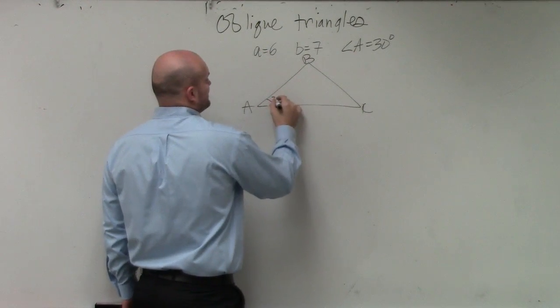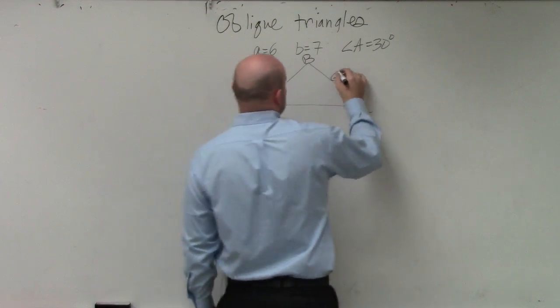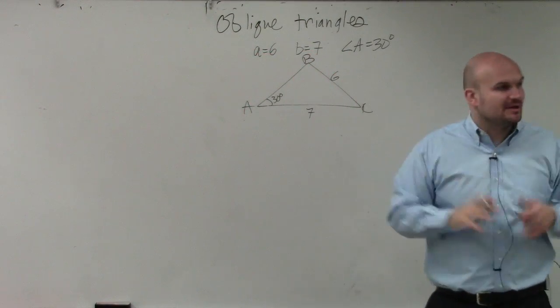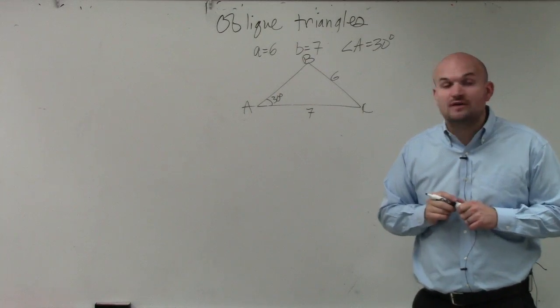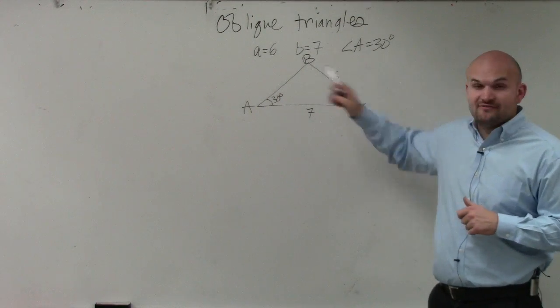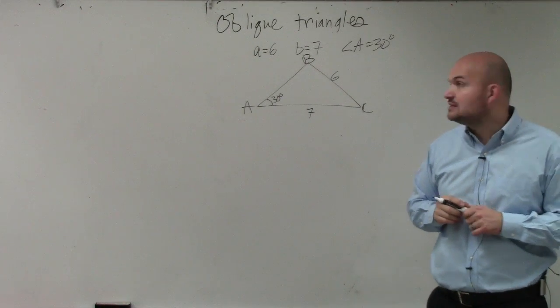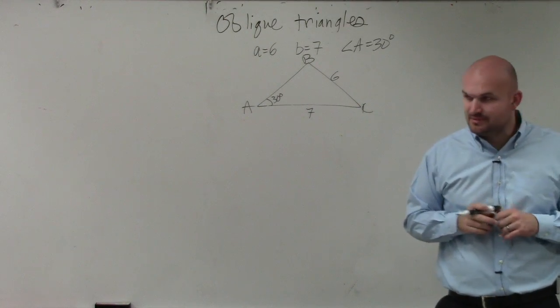So we know A is 30 degrees and we know the opposite side length of A is 6 and we know B is 7. So therefore, obviously, I'm going to want to use the law of sines and we're going to want to find the angle of B first. Law of sines. Misspoke. I'm sorry.